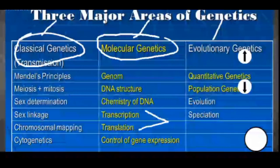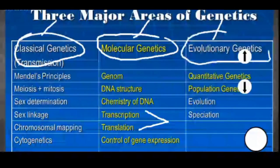Molecular genetics also covers the control of gene expression — silencing a gene from expressing itself and so on. The third field of study under genetics is evolutionary genetics, also known as population genetics. It deals with the study of a population, the evolution of living organisms, speciation, and the Hardy-Weinberg equilibrium.